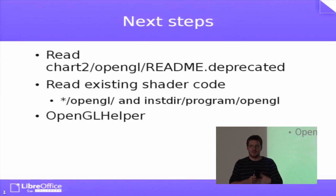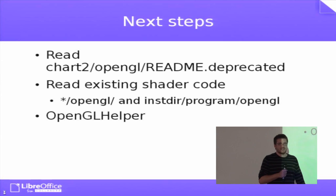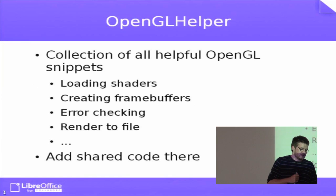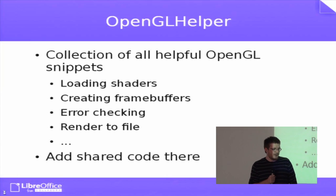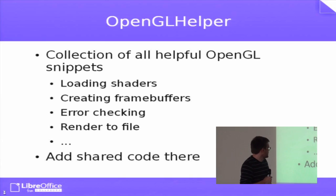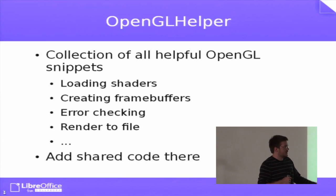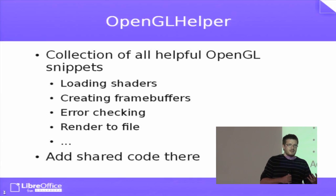Shader code is currently in chart2 OpenGL, slideshow OpenGL, and I think canvas OpenGL. Reading existing shader code is quite helpful — many problems are already solved and you might just be able to reuse it. At installation time they end up in program/opengl and are loaded from there at runtime. A quite helpful class is OpenGL Helper, where I extracted all useful OpenGL code: loading and compiling shaders, creating framebuffer objects, error reporting, rendering to a file, and some logging. It's also the place to add shader code that will be used in at least two places.